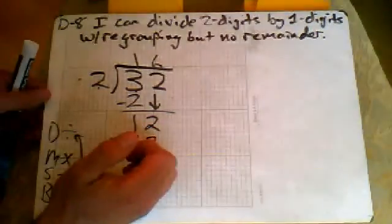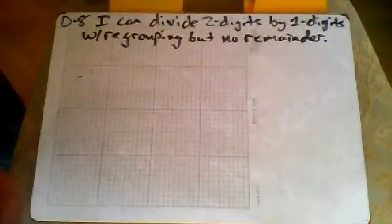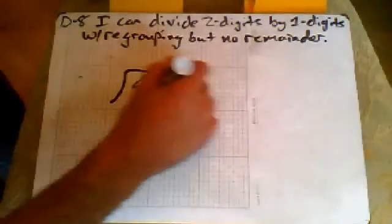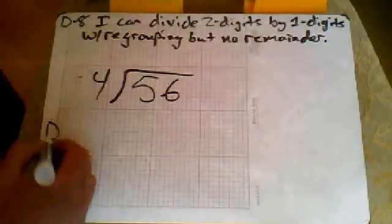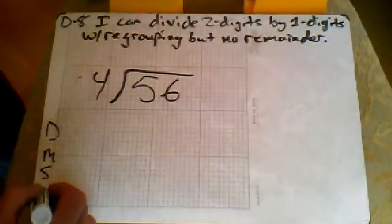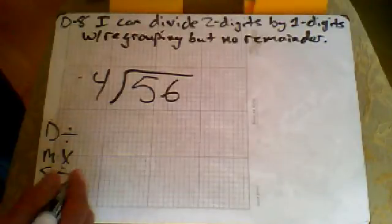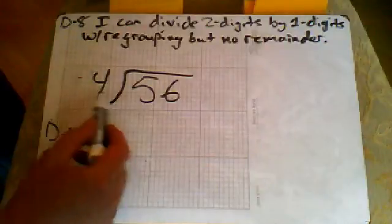Let's do one more problem. Let's do 56. That's the third problem over. 56 divided by four. So remember dirty monkeys smell bad. Divide, multiply, subtract, bring down and repeat those steps.